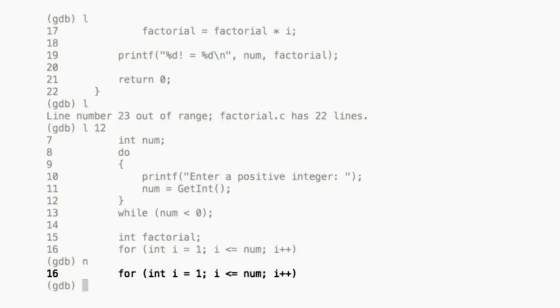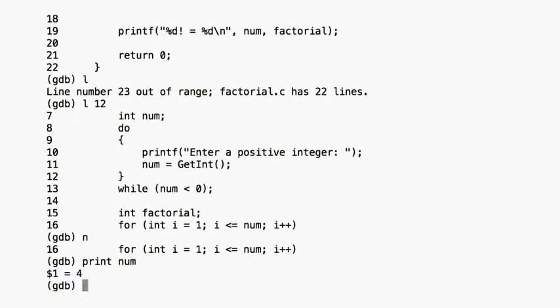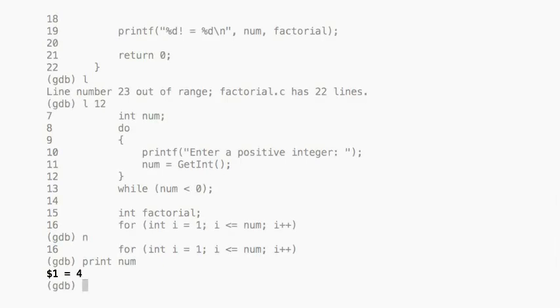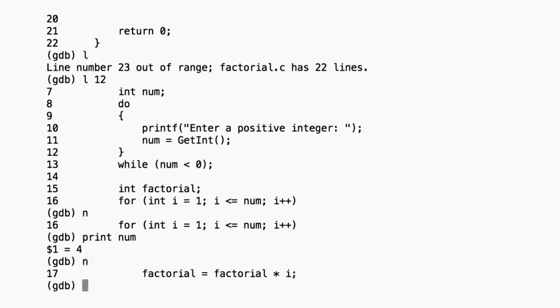Now we're on the for loop. Let's make sure that our num variable contains 4. We do this with the print, or p, command. GDB tells us that num is indeed storing 4, as we expected. The $1 that GDB prints out is a special GDB variable that is now set to store the number 4 as well. You can ignore this for now, but these GDB variables come in handy in more advanced cases when you want to recall what you've done in the past. Moving on with next, we see that we start moving through the for loop.